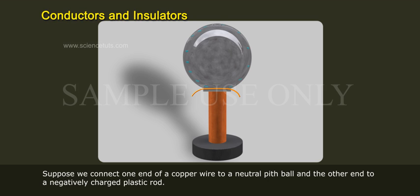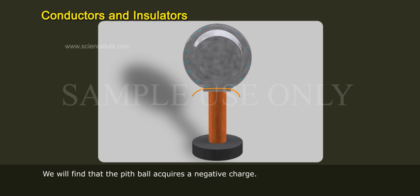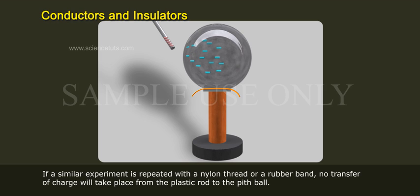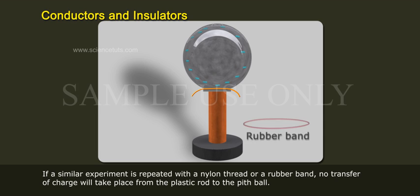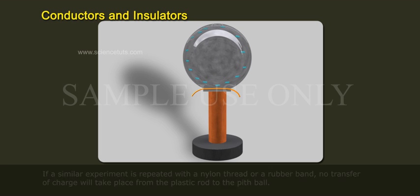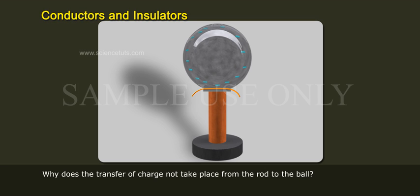We will find that the pith ball acquires a negative charge. If a similar experiment is repeated with a nylon thread or a rubber band, no transfer of charge will take place from the plastic rod to the pith ball. Why does the transfer of charge not take place from the rod to the ball?